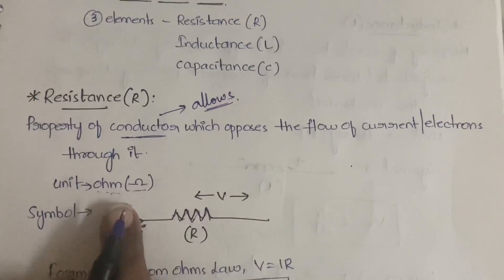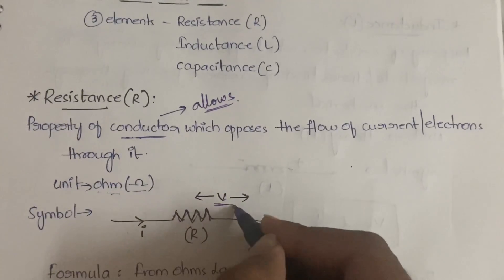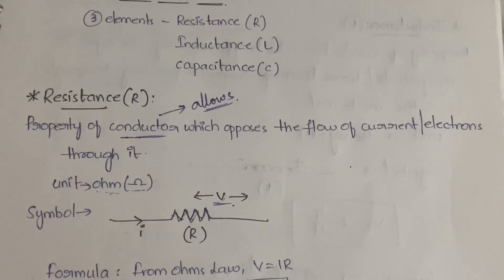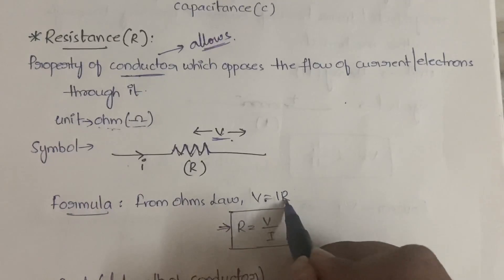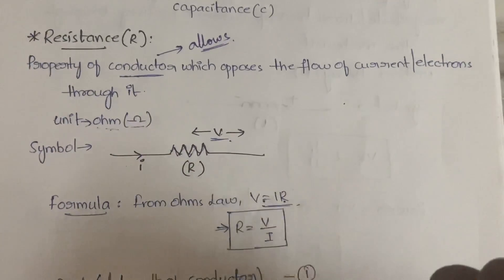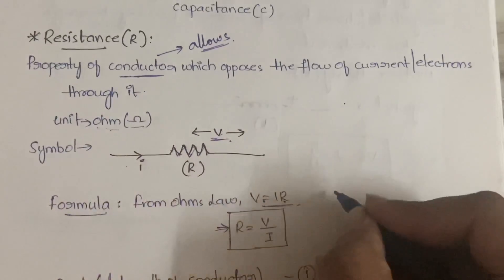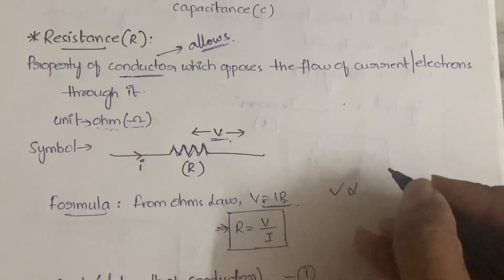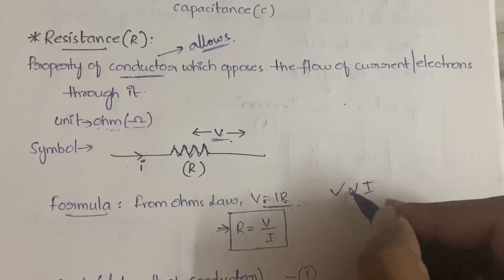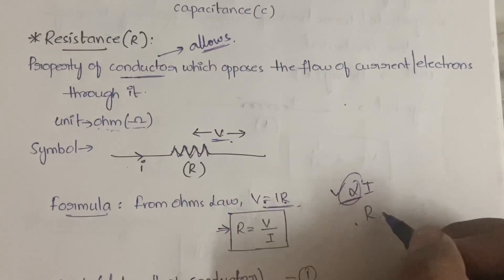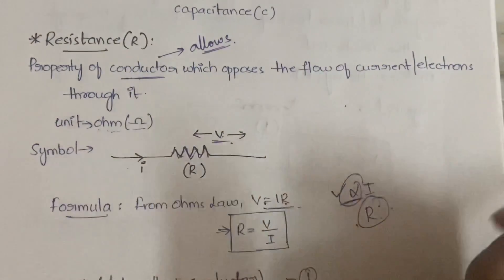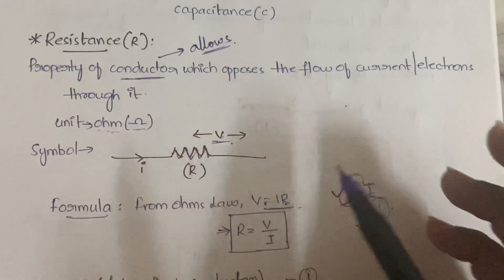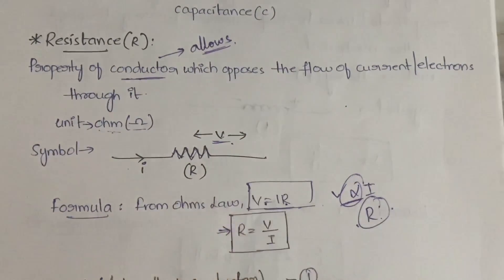The current V here refers to potential difference. From Ohm's law, V is equal to IR. Ohm's law states that the potential difference across a conductor is directly proportional to the current flowing through it, and the constant of proportionality is the resistance. So R is equal to V divided by I.